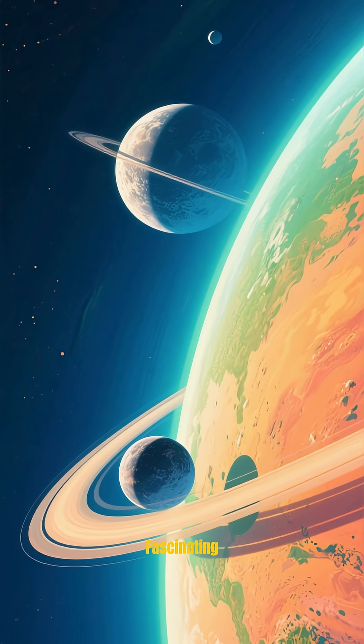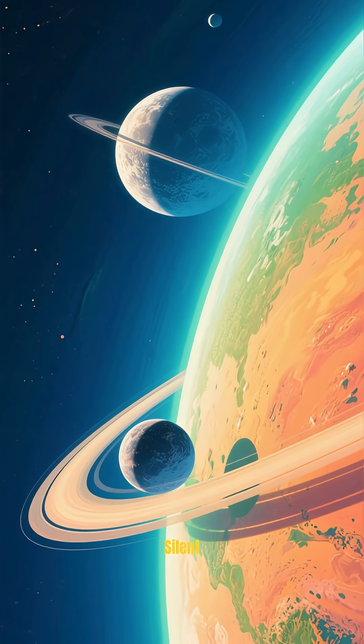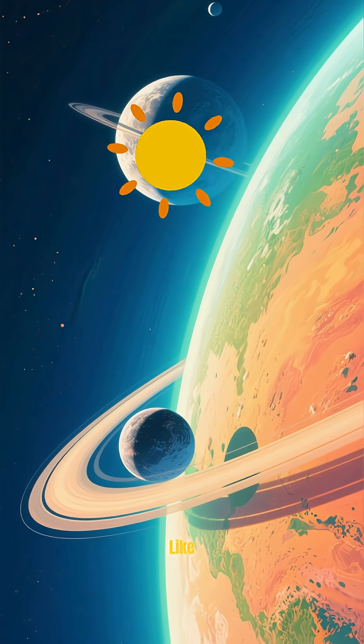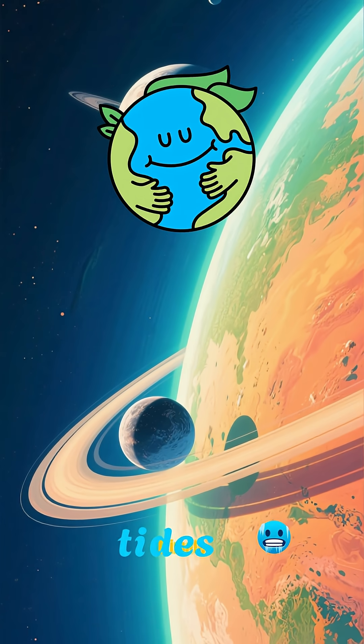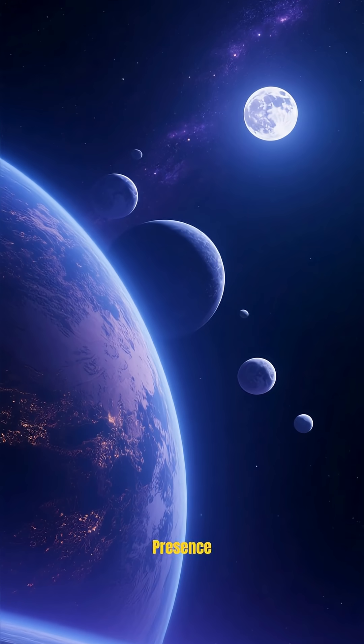Even more fascinating, scientists believe it could have two or more moons. Silent guardians watching over it, much like our own moon stabilizes Earth's climate and tides. There would be a constant presence in its night sky, protecting it from cosmic chaos.